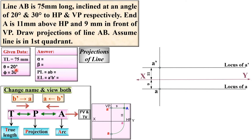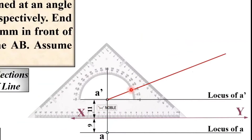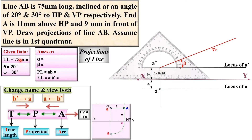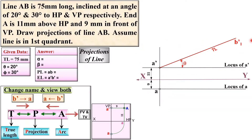Theta equals 20 degrees. The true inclination theta is represented in the elevation (front view). You can see A'B1' makes 20 degrees. Using a set square, take the 20-degree angle from A'. The angle theta = 20 degrees should be marked here. The true length of 75 mm is given, so locate B1' at exactly 75 mm from A' along this direction. Now you can identify the locus of B'.